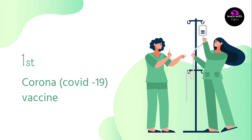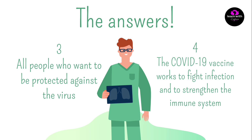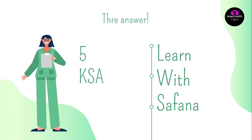في الخانة الأولى بنتكلم عن Corona COVID-19 vaccine — لقاح كورونا. الخانة الثانية بنكتب: Virus effect — تأثير الفيروس. الخانة الثالثة: All people who want to be protected against the virus — كل الناس الذين يريدون أن يكونوا محصنين اتجاه الفيروس. Number four: The COVID-19 vaccine works to fight infection and to strengthen the immune system — لقاح COVID-19 يعمل لمحاربة العدوى وتقوية جهاز المناعة.